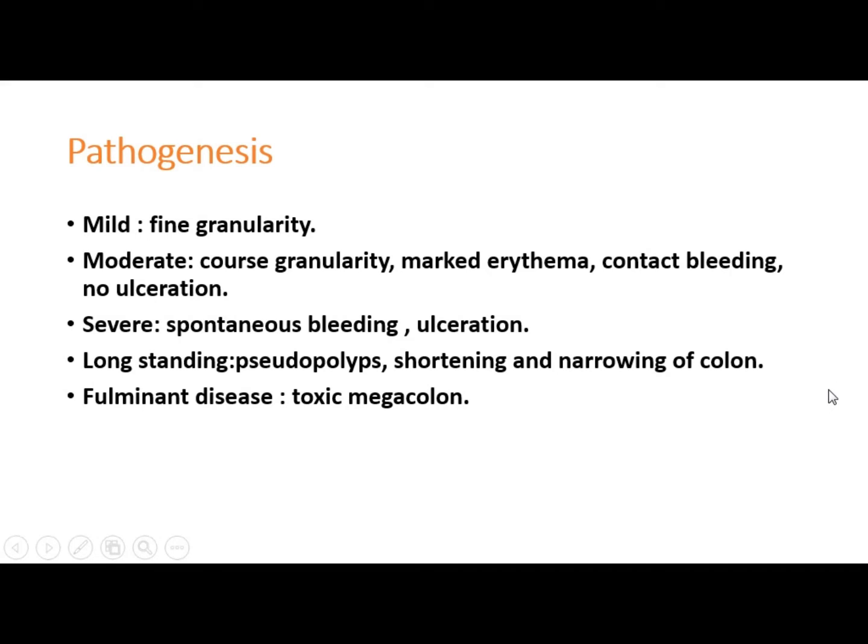Pathogenesis is important because each stage has different radiological features. In mild disease there is fine granularity of the mucosa. In moderate disease there is coarse granularity, marked erythema, contact bleeding, but no ulceration. In severe disease there is spontaneous bleeding and ulceration. In long-standing disease there are pseudopolyps — the remaining normal mucosa between ulcerated parts — and shortening and narrowing of the colon. The last stage is toxic megacolon.